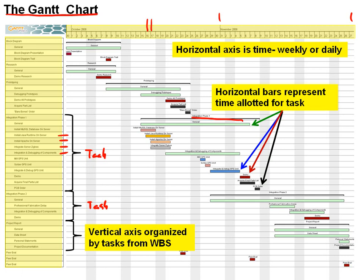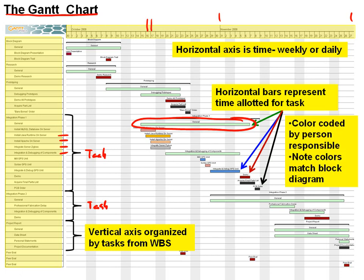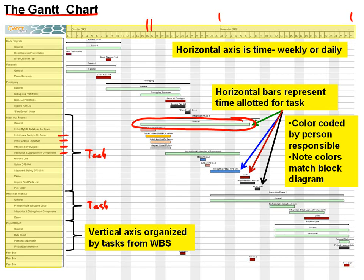Horizontal bars on the Gantt chart give the time allotted for each task — when it will begin and when it will end. The horizontal bars are color-coded by the person responsible. So by looking at a Gantt chart that's done well, not only do you know what you should be doing at any given period of time, you also know who's responsible for it. Notice the colors match the block diagram, so there's this holistic vision for putting project management together.